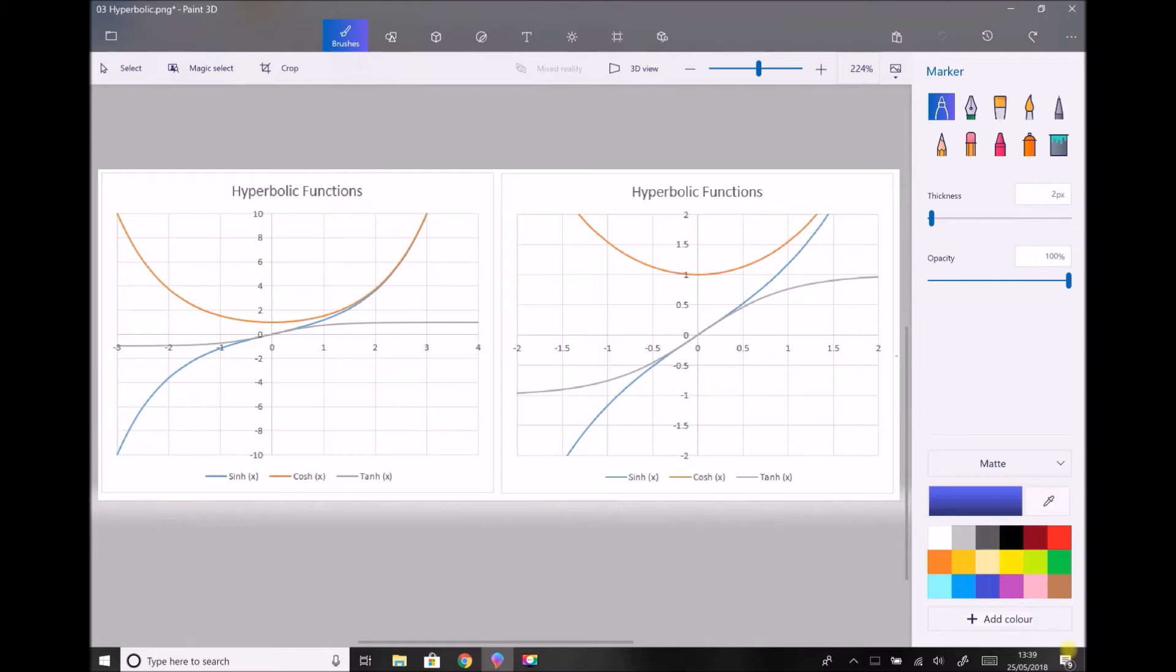The hyperbolic sine, which is written S-I-N-H and is pronounced sinh. The hyperbolic cosine, which is written C-O-S-H and is pronounced cosh, and the hyperbolic tan, which is written T-A-N-H and is pronounced tanh. So the pronunciation of some of these is somewhat different from how they appear.